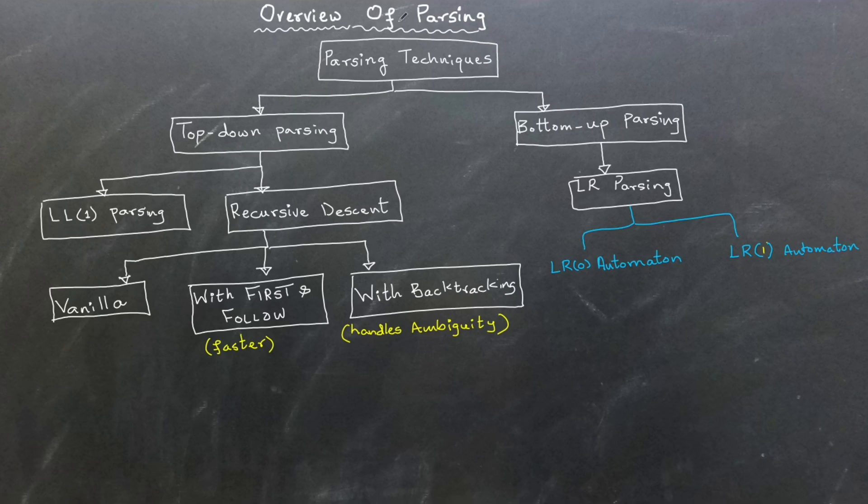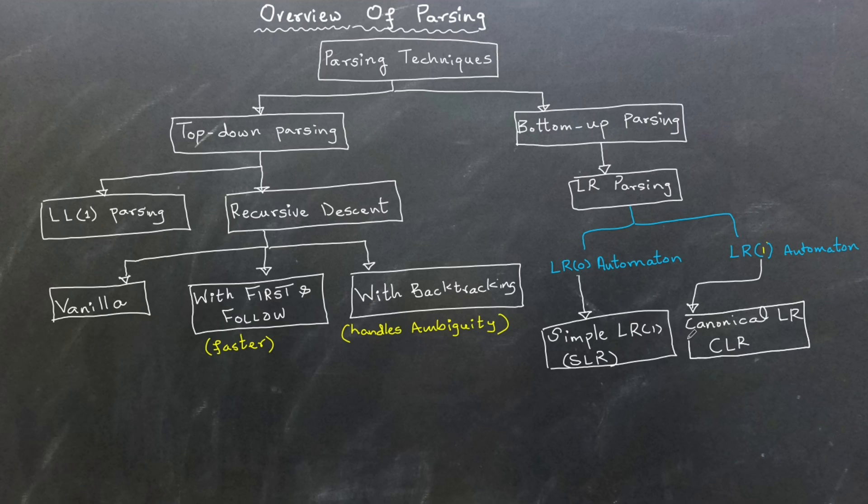From these automata, we derive three key parsing schemes. Number one is SLR or simple LR parsing. This uses LR(0) automaton with look-ahead for simple grammar rules.